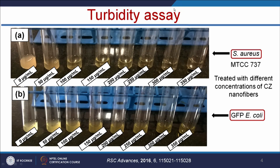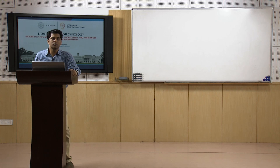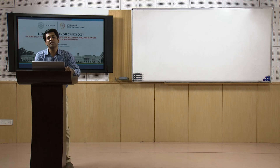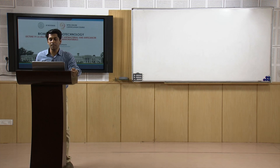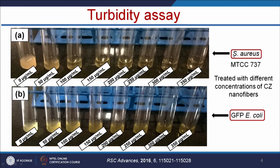The first experiment is turbidity assay, where we visually monitor the turbidity of the bacterial growth. Whenever you make nanoparticles, the first thing is to select a suitable bacteria to study the antibacterial efficiency. The ideal choice should be one gram-positive bacteria and one gram-negative bacteria. In this experiment, we have selected Staphylococcus (SRAS) as a gram-positive model and E. coli as a gram-negative model, and treated them with different concentrations of copper-zinc nanofibers.